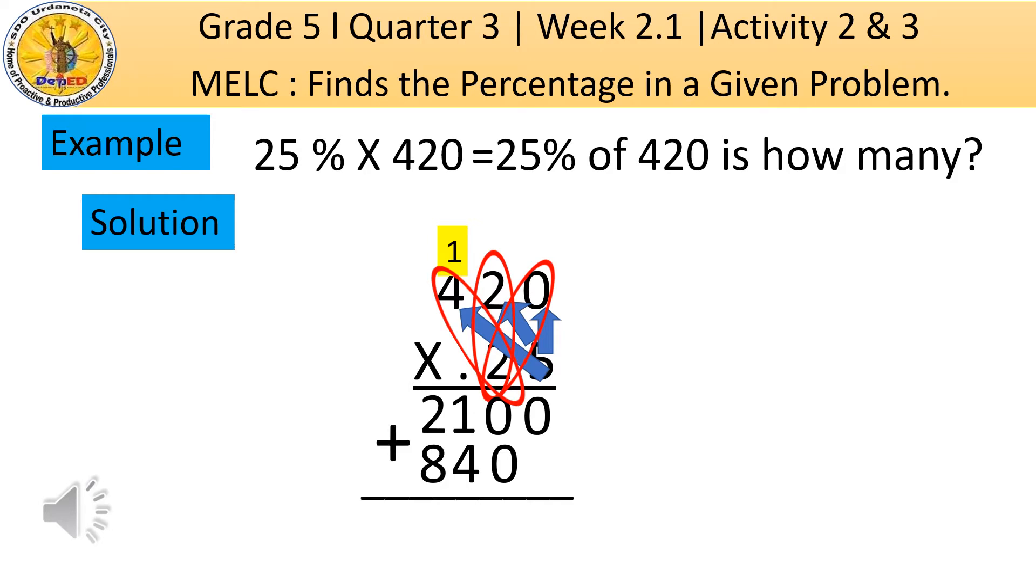Then let us add. Bring down 0. 0 plus 0 is still 0. 1 plus 4 is 5. And 2 plus 8 is equal to 10.